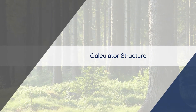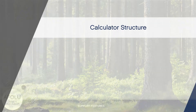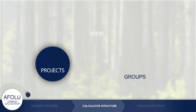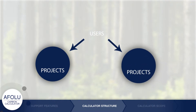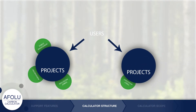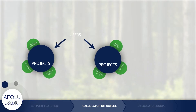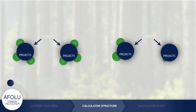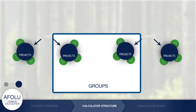The AFLU Carbon Calculator is organized in a self-regulating system of users, projects, and groups. Users create projects and then add activities to the projects to estimate carbon impacts. Users may also choose to share their project with other users by creating or joining a group.